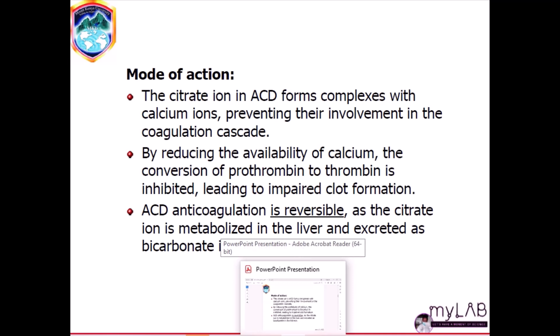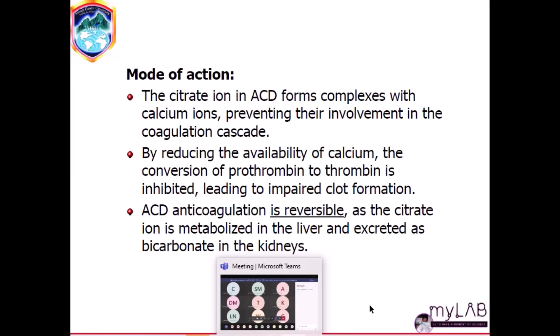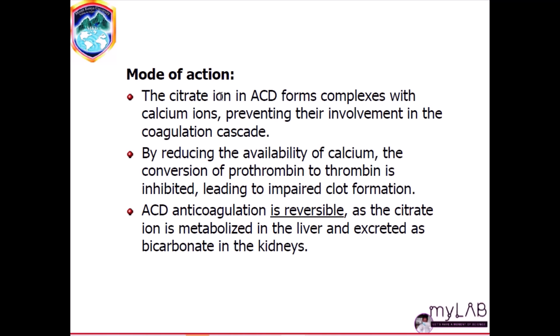The mode of action for ACD involves the citrate ion, which forms complexes with calcium ions present in the blood. This prevents the involvement of calcium ions in the coagulation cascade. By reducing the availability of calcium, the conversion of prothrombin to thrombin is inhibited, leading to impaired clot formation and therefore the blood does not clot — a process known as calcium ion chelation.